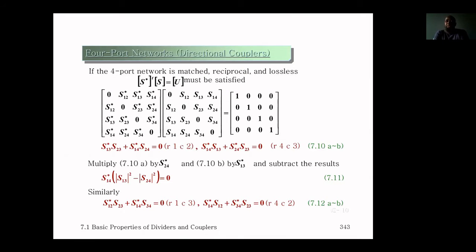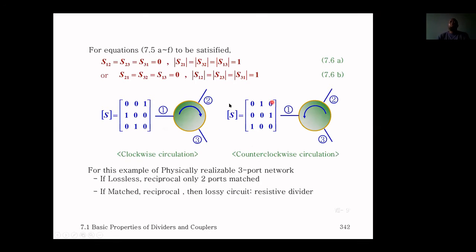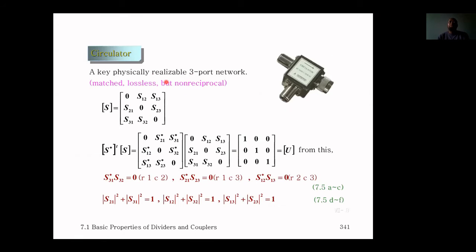Before the break, we looked at three-port networks and concluded that a three-port network cannot be matched at all ports while remaining lossless and reciprocal. If the condition of reciprocity is relaxed, we can have a realizable three-port network that is matched and lossless but not reciprocal.